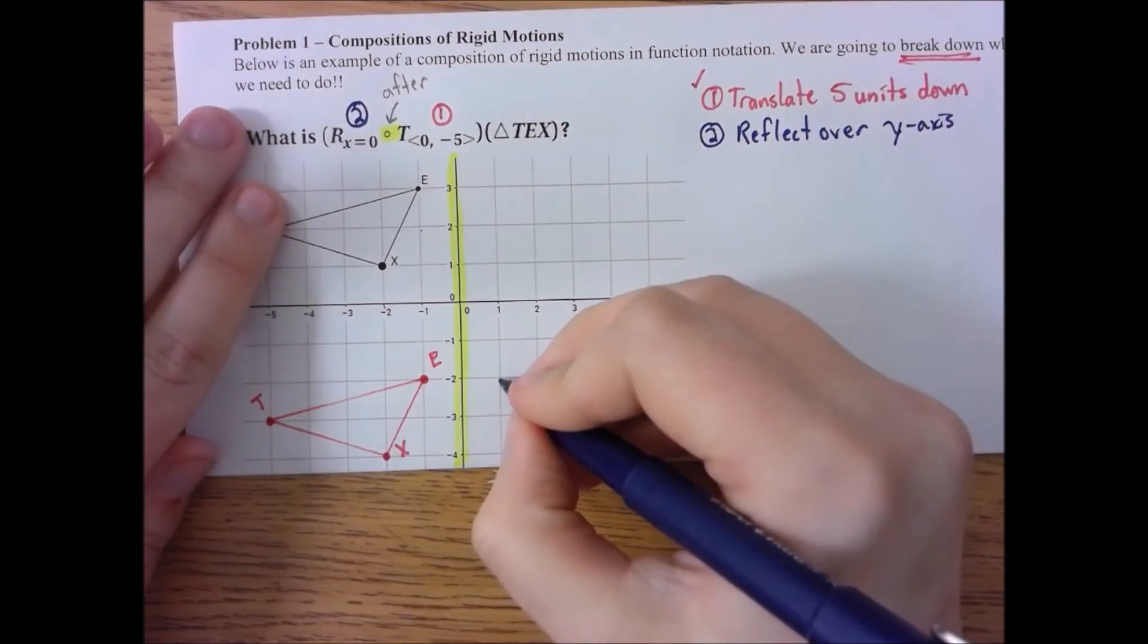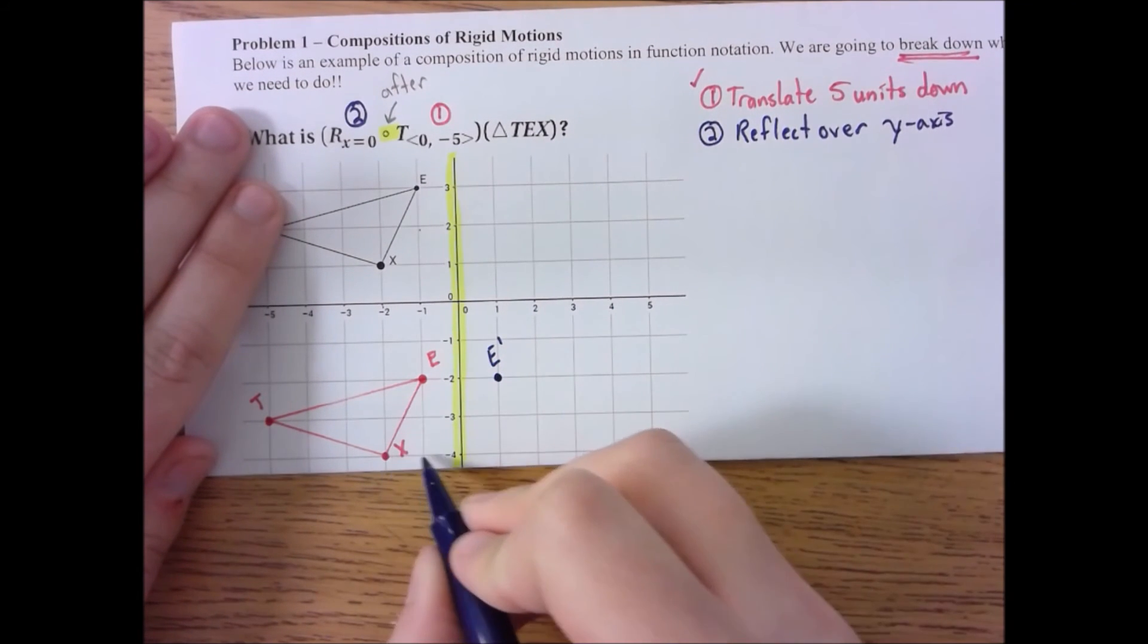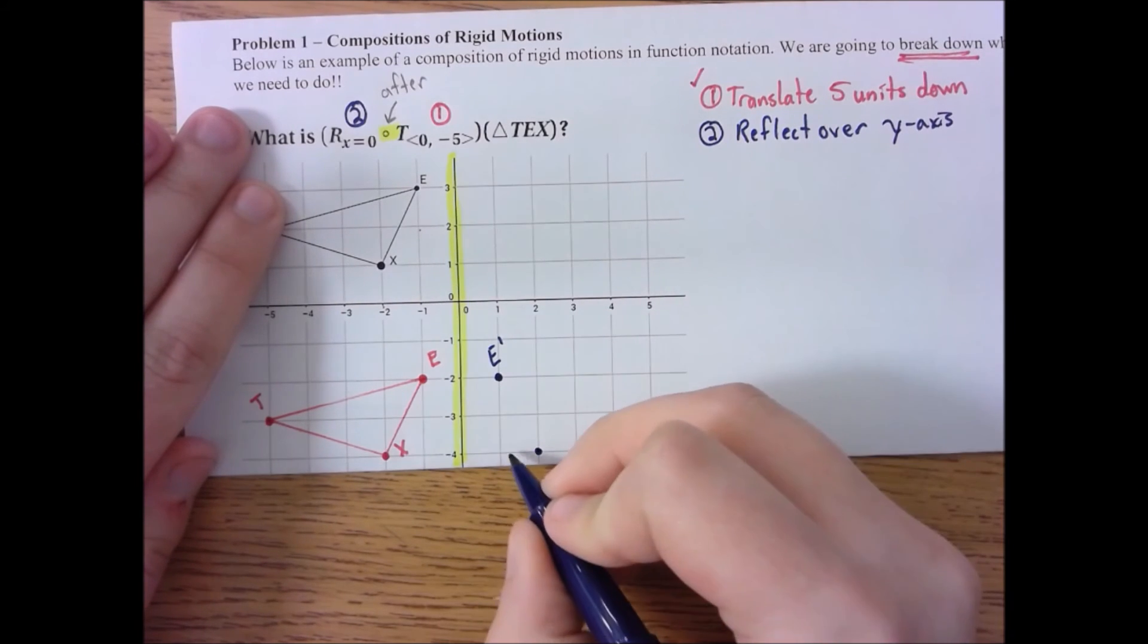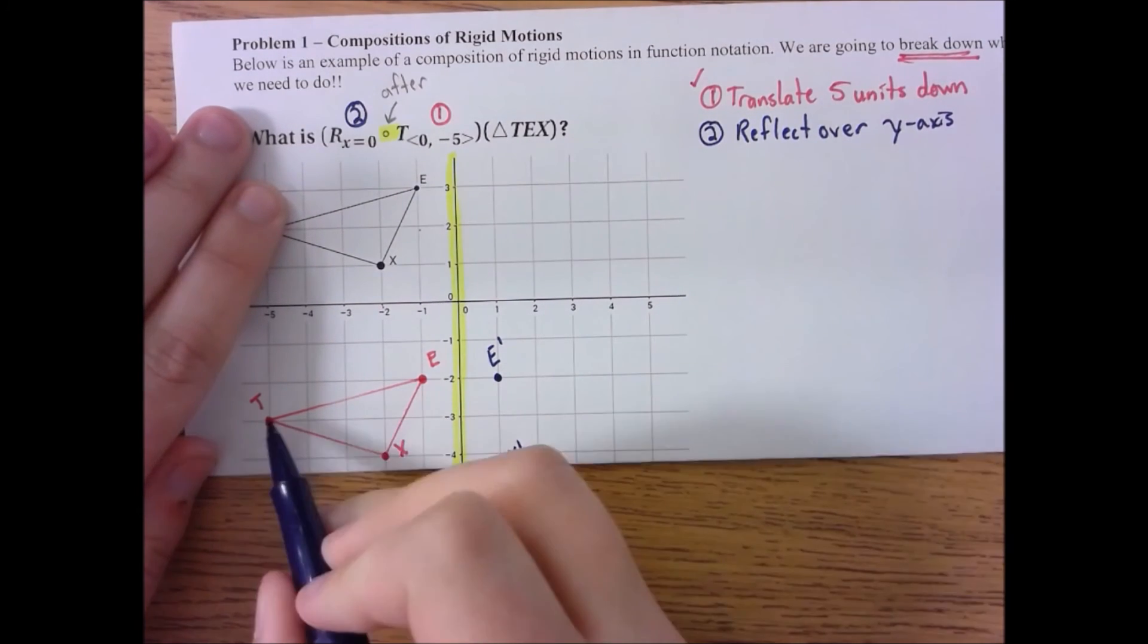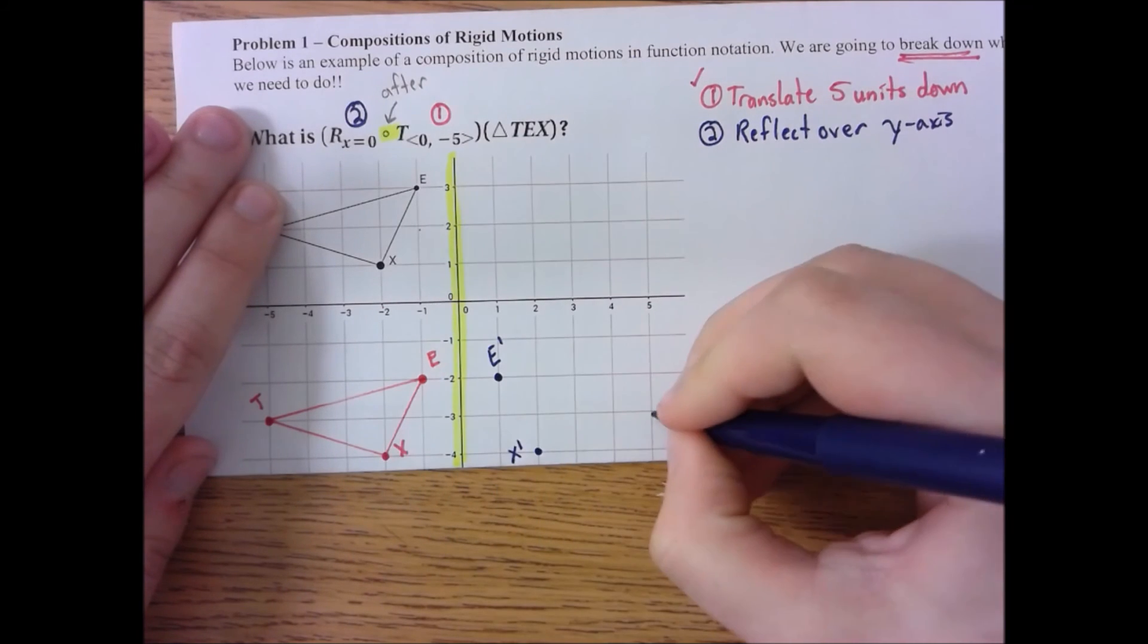So E prime is going to go here, X prime, right here, and T prime. So that's going to be one, two, three, four, five, one, two, three, four, five.